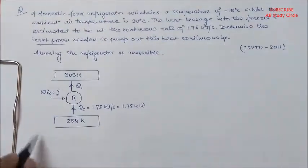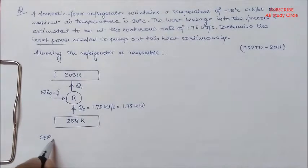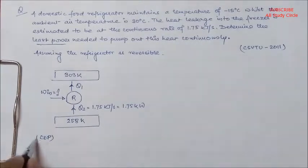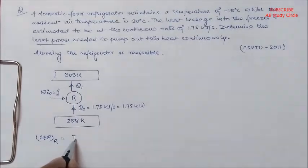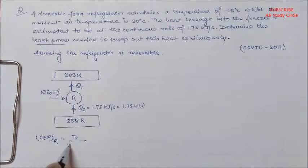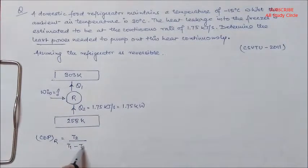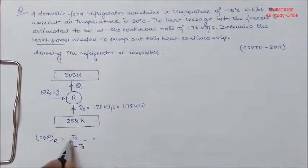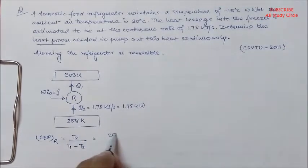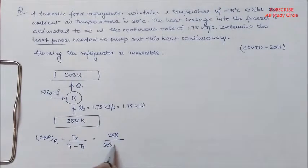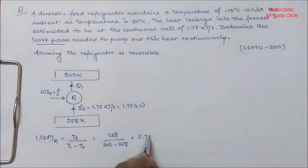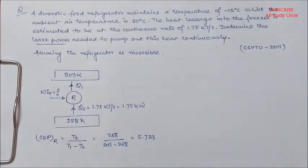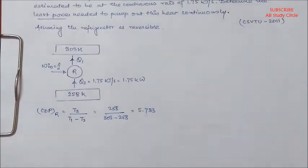Let's find out the COP corresponding to the temperature limit. COP of the refrigerator is T2 by T1 minus T2, where T2 is 258, T1 is 303 minus 258, and it comes as 5.733. This is your COP.